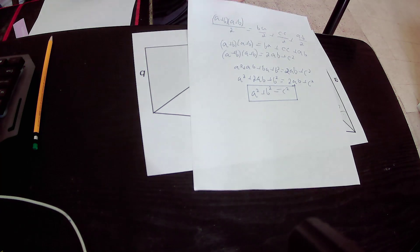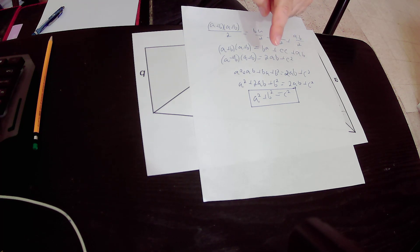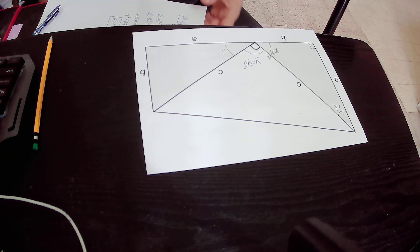We got that A squared plus B squared equals C squared, and that is exactly the Pythagorean theorem, which says that the square of the hypotenuse equals the sum of the squares of the perpendiculars. And so we can summarize the proof of the Pythagorean theorem.